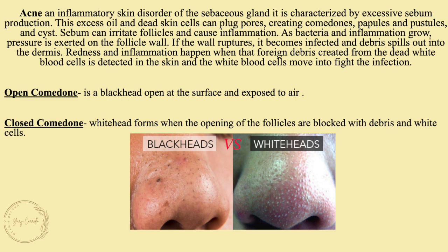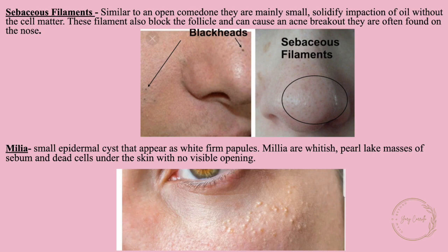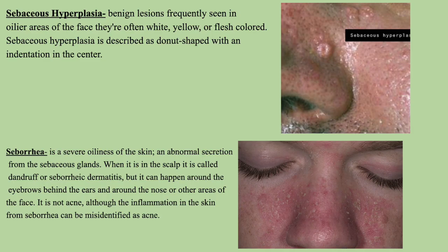An open comedone is a blackhead — open at the surface and exposed to air. A closed comedone is a whitehead, formed when the opening of the follicle is blocked with debris and white cells. Sebaceous filaments are similar to open comedones but are mainly small solidified impactions of oil without cell matter. They also block the follicle and can cause acne breakouts, and are often found on the nose. Milia are small epidermal cysts that appear as white, firm papules — whitish pearl-like masses of sebum and dead cells under the skin with no visible opening.